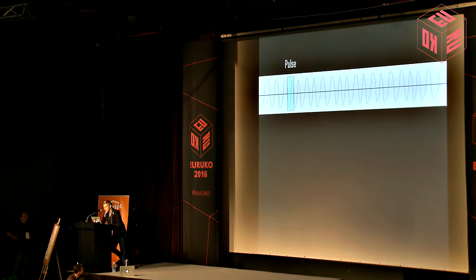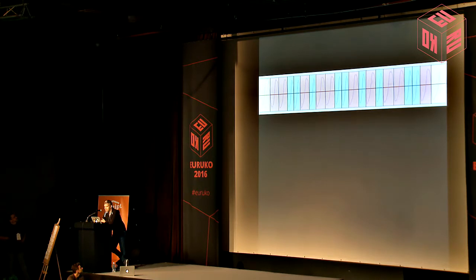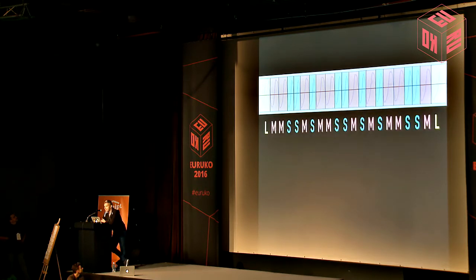If you look closely, you might notice that there are several identical pulses in this segment — they all have the same length. And there's another group of pulses, also identical, but a bit longer than the first ones. And finally, a third group, only two pulses, which are even longer again. So these pulses obviously come in three different lengths: long, medium, and short.